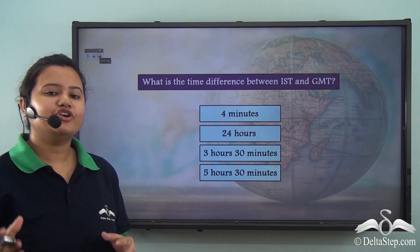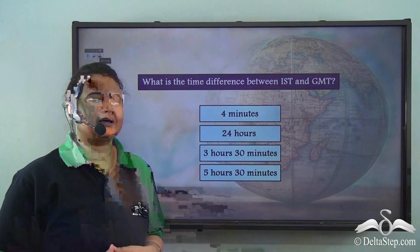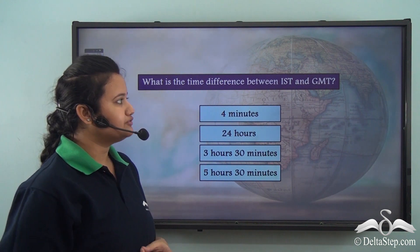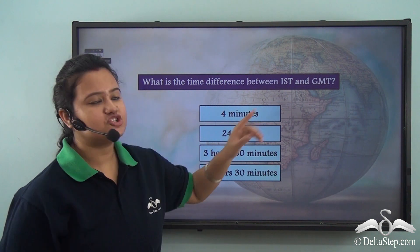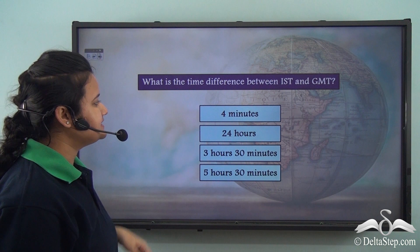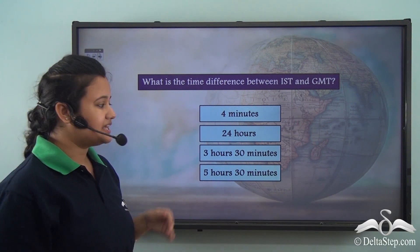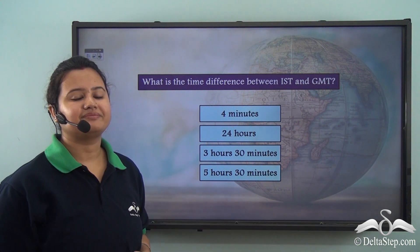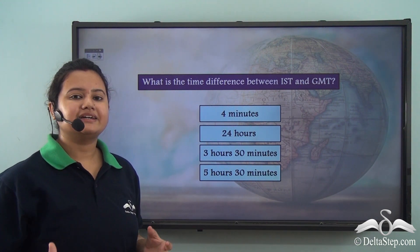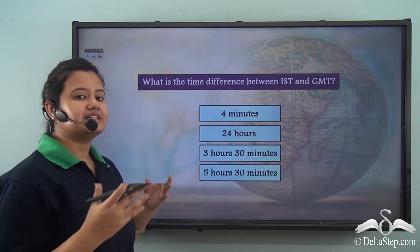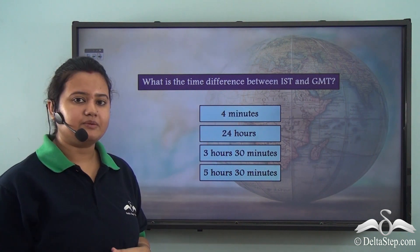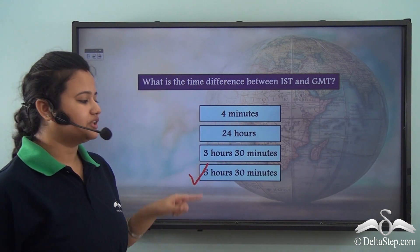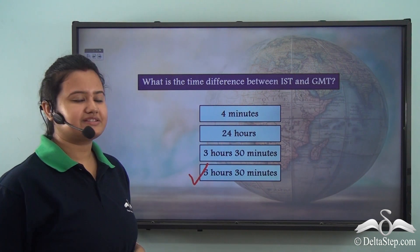Before understanding the concept of the time zone, let me ask you a question: what is the time difference between IST and GMT? Is it 4 minutes, 4 hours 30 minutes, or 5 hours 30 minutes? The correct answer is: the time difference between IST and GMT is 5 hours and 30 minutes.